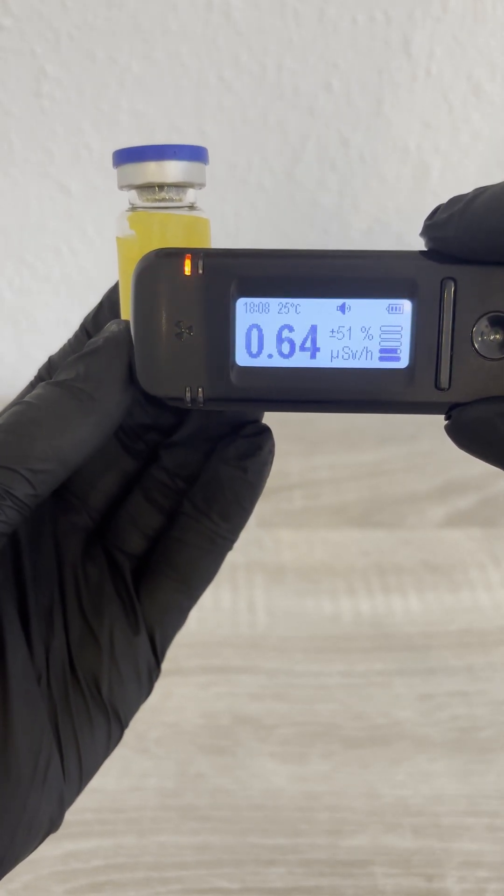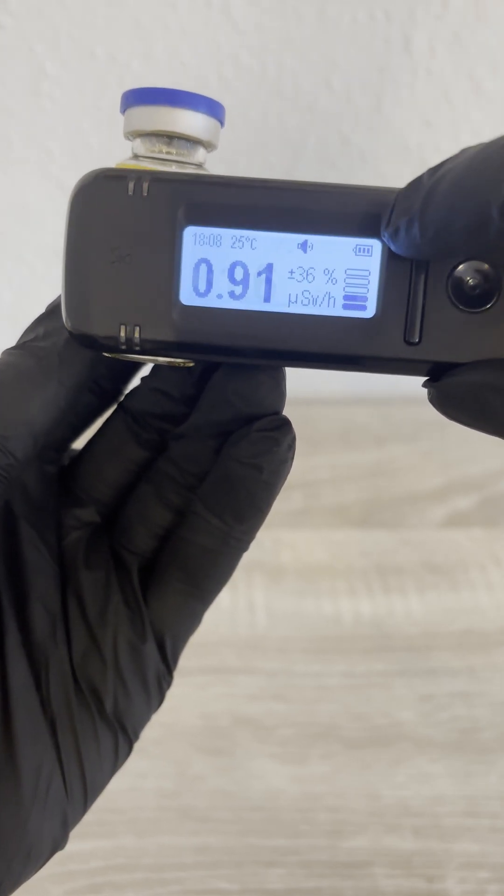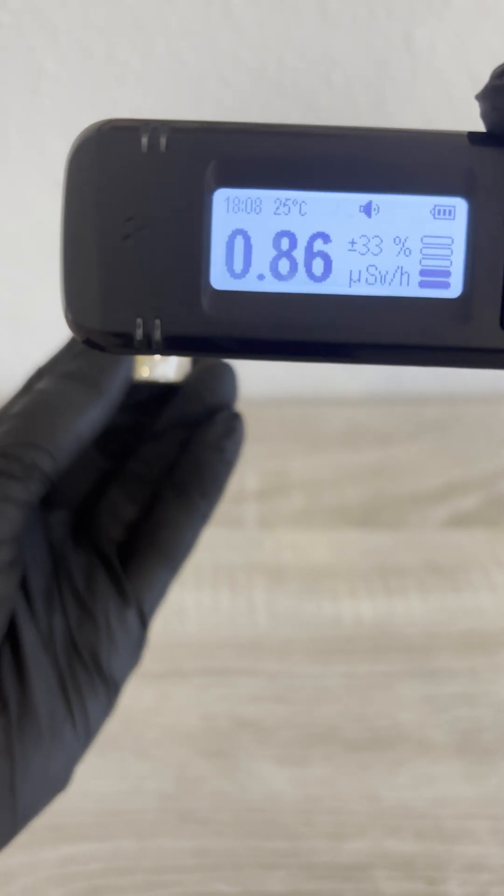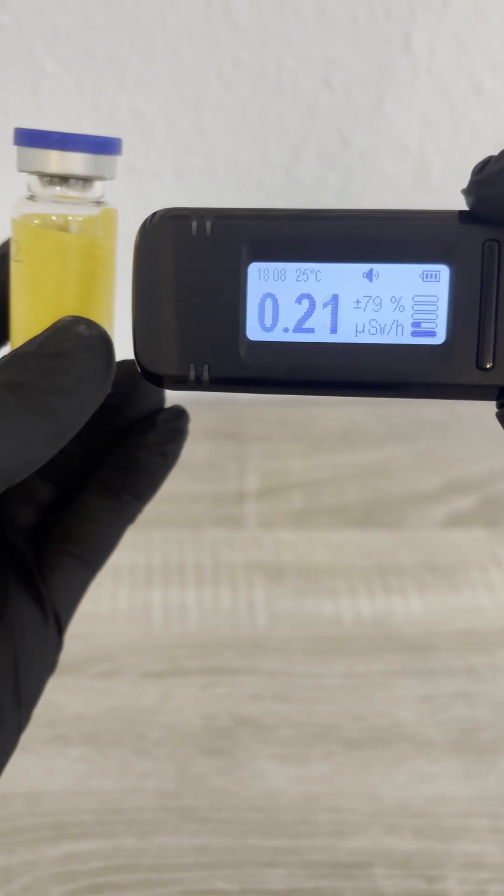Thorium-232 decays over many steps to stable lead-208. Along the way, it emits alpha particles and gamma rays, which is exactly what we're detecting here.